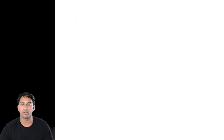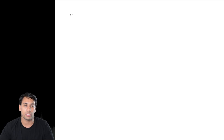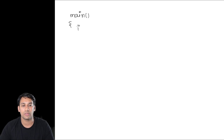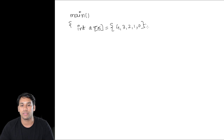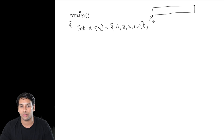Now, till now we have seen a few things which I am going to explain here again. Suppose we have this program: main, int a[5] — that means a is an array — storing their values 4, 3, 2, 1, 0. That means this a is an array and it is storing the base address of this array.